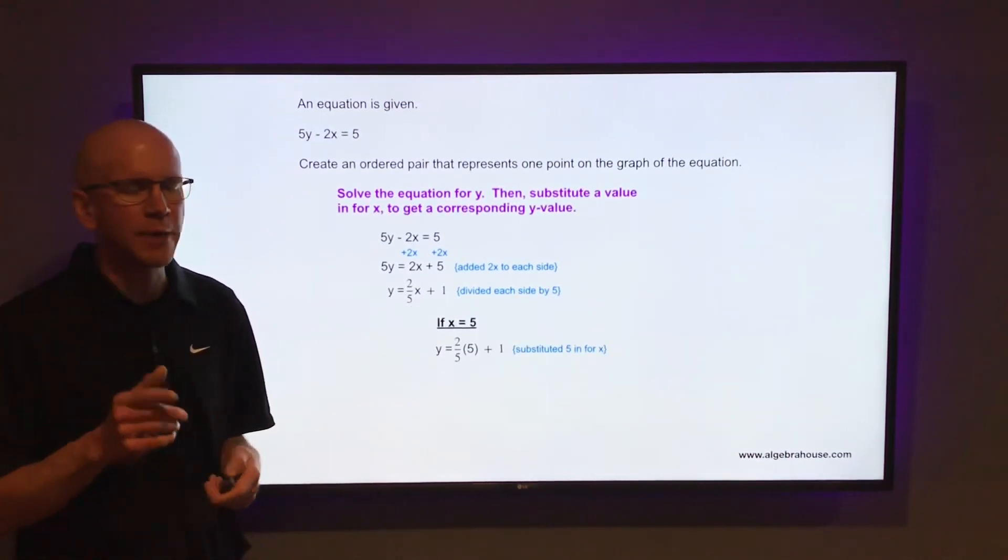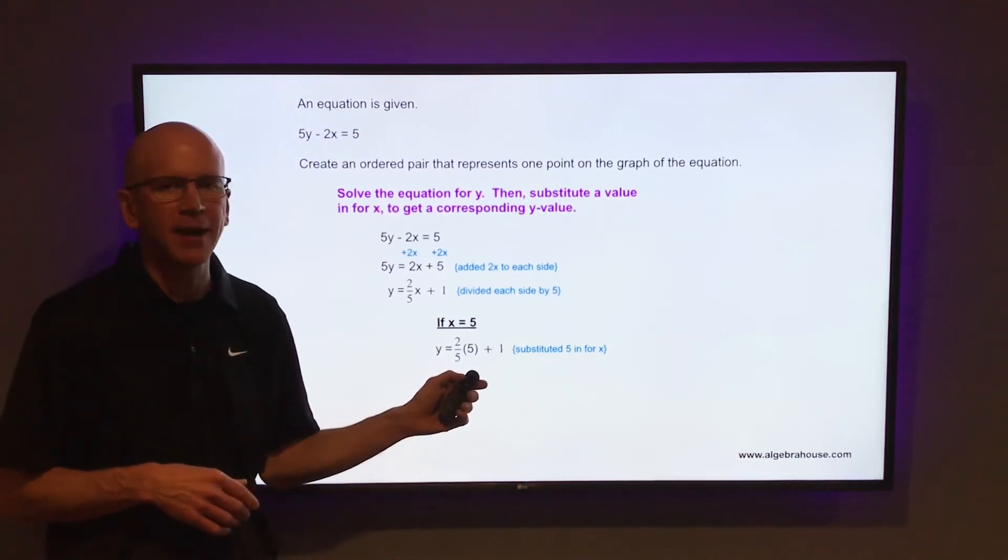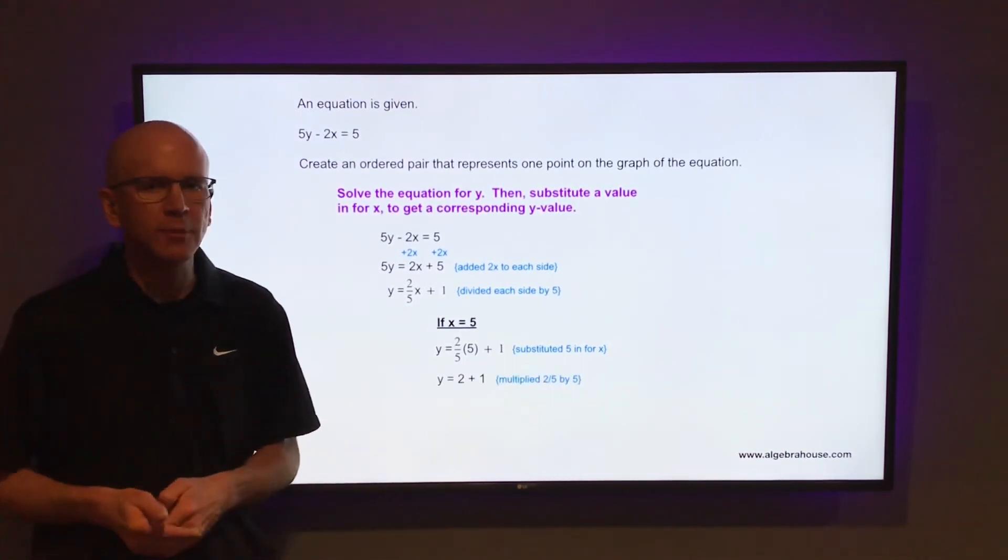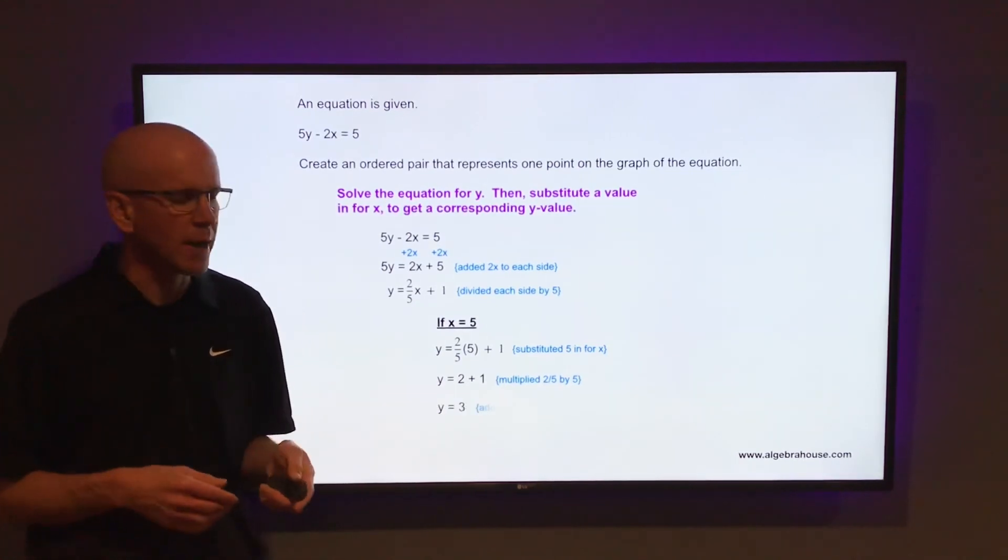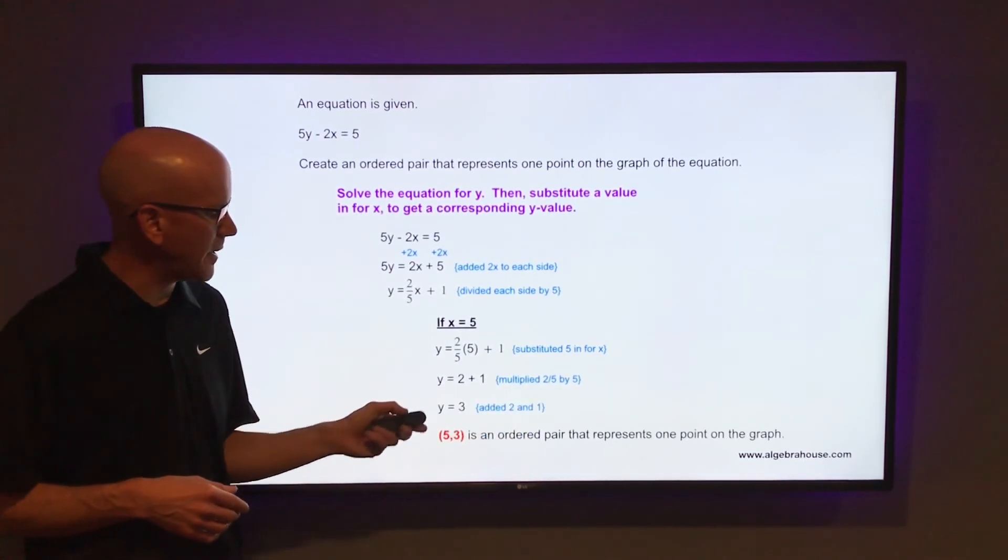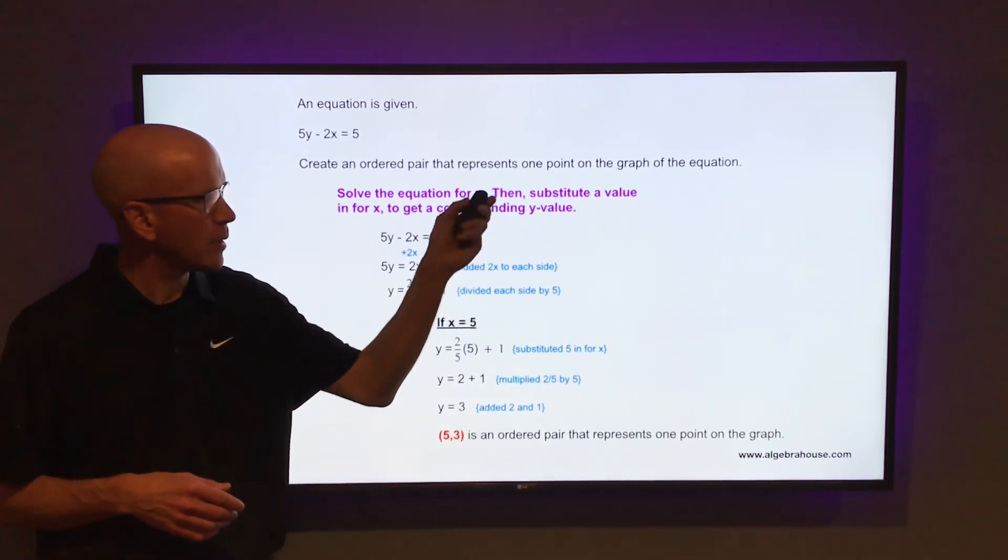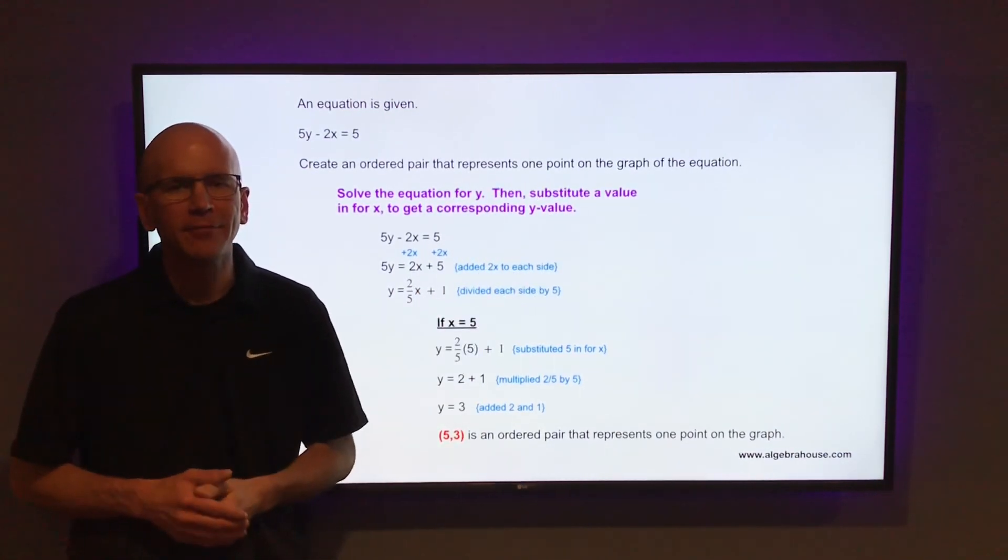When you do that you get y = 2 times 5 + 1. Multiply 2 by 5, that is 2, so y = 2 + 1, and of course y = 3. So when x is 5, y is 3. That (5, 3) is an ordered pair that represents one point on the graph of that equation.